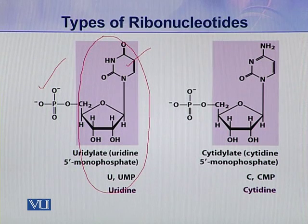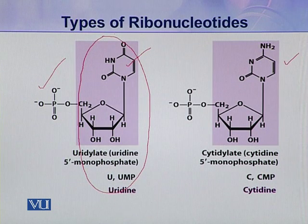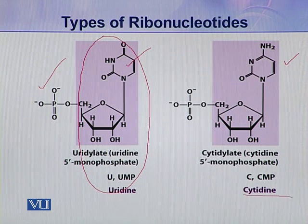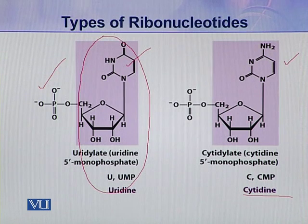The fourth and last type of ribonucleotide is cytidylate. In cytidylate, the nitrogenous base is cytosine, along with the pentose sugar and phosphoric acid. When cytosine attaches with pentose sugar it makes cytidine, and when a phosphoric acid is attached to this cytidine, a complete nucleotide — cytidylate — is formed.